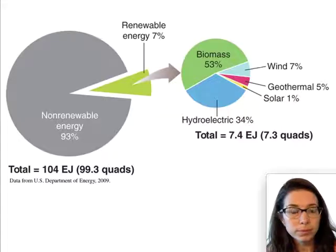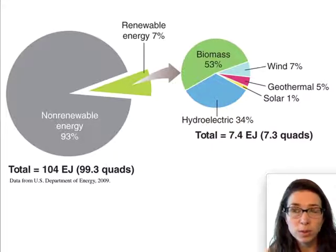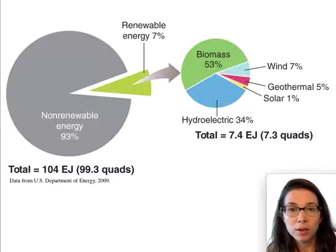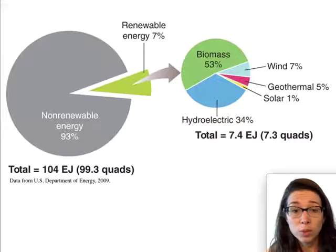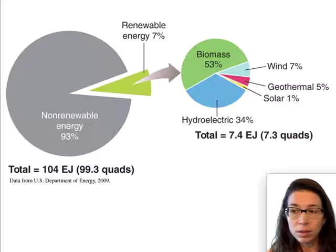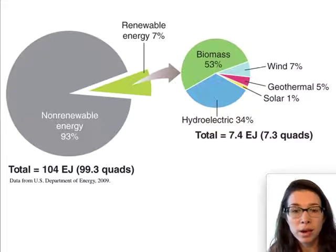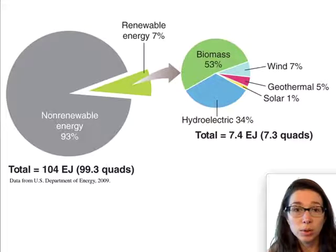Here is a pie chart of all of the resources that we use to generate energy. In gray are all the other methods we discussed previously, including fossil fuels and nuclear energy. That green wedge represents our renewable resources — things we can use indefinitely, such as solar power, wind, or geothermal, or resources like biomass that we can regenerate, such as growing trees, burning them, and growing more.